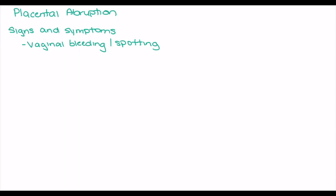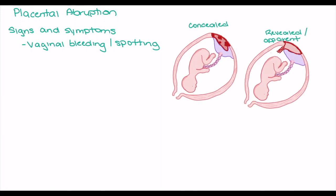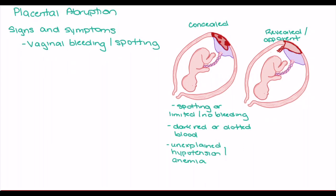A number of signs and symptoms are related to placental abruption, the most common being painful vaginal bleeding or spotting. Bleeding can be either concealed or apparent. In concealed bleeding, despite hemorrhage within the decidua basalis, the edges of the placenta remain intact, trapping the hemorrhage internally — resulting in little, no, or only spotting of dark red or clotted blood, with possible unexplained hypotension or anemia. With an apparent abruption, one edge of the placenta is fully removed from the maternal tissues, allowing blood to leak into the uterine space and exit through the vagina, producing bright red bleeding. Notably, the amount of visible bleeding is not necessarily correlated to the degree of the hemorrhage.